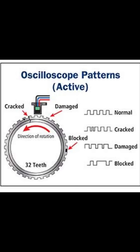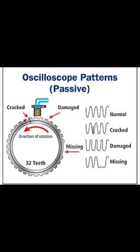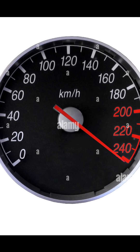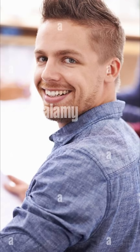Hall sensors produce a square wave output, while inductive sensors generate a sine wave. When speed increases, a Hall sensor's frequency increases, whereas an inductive sensor's frequency and voltage both increase.